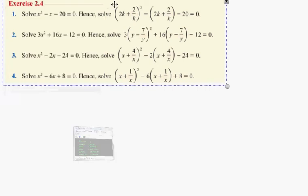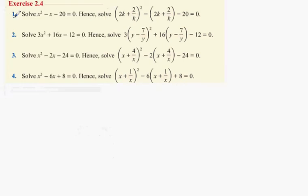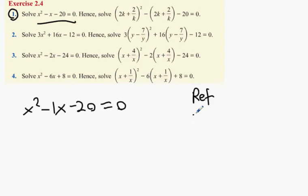What we have here is question 1. It says solve the following equation: x squared minus 1x minus 20 equals 0. I call the last number, I call this the reference number. It's a reference number of minus 20.